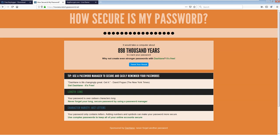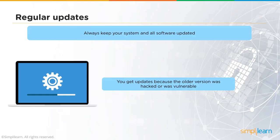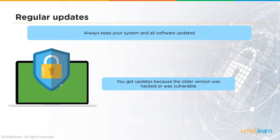Regular updates for all software are recommended — set auto-updates if possible, but be aware they may require restarts and consume bandwidth, which could disrupt activities like video calls. At minimum, check for updates once or twice a week. Updates are released because older versions had vulnerabilities — reported by third parties or found through vulnerability assessments and penetration tests — and patches are created to mitigate those vulnerabilities.